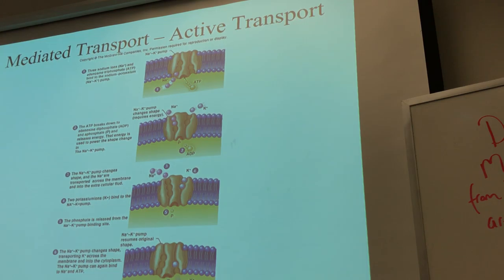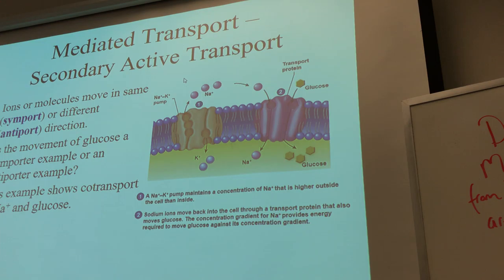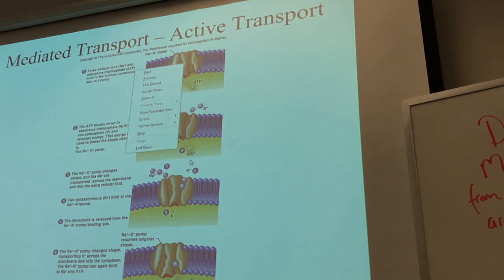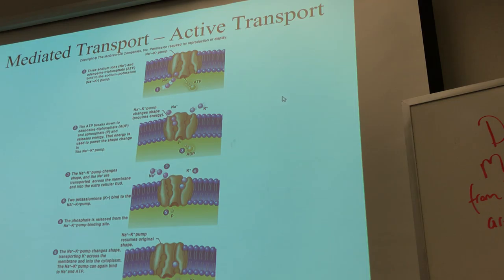In the sodium-potassium pump, the more I work this pump, the more sodium I pump out. The more sodium I pump out, the lower the sodium on the inside and the higher it is on the outside. I still want to keep pumping it out. So when I'm going against the concentration gradient, I have to put a lot of ATP — a lot of energy — in there.